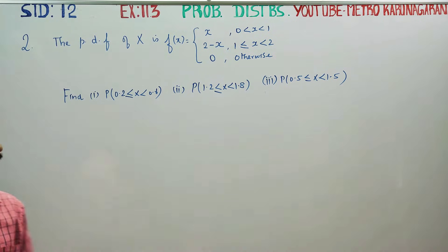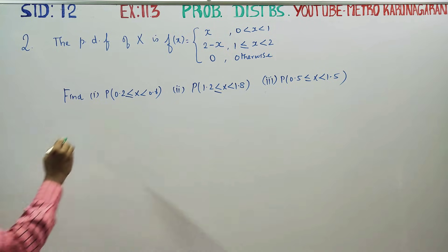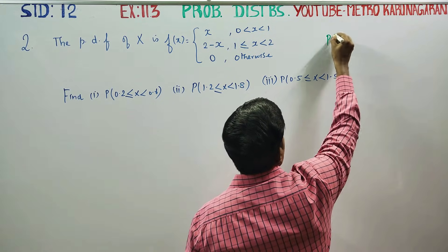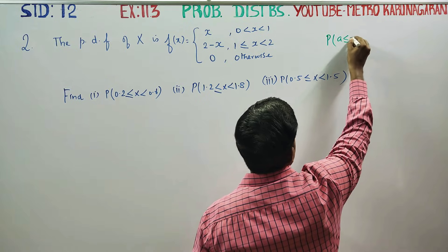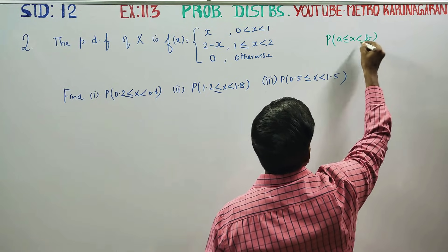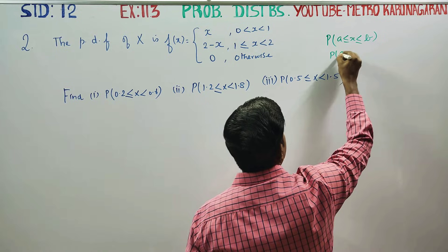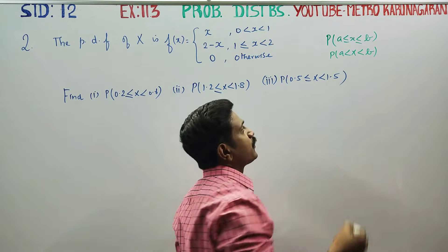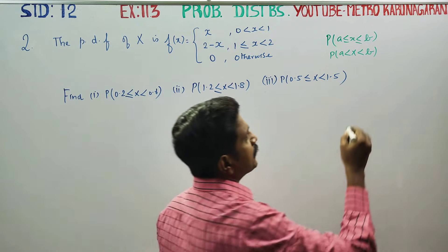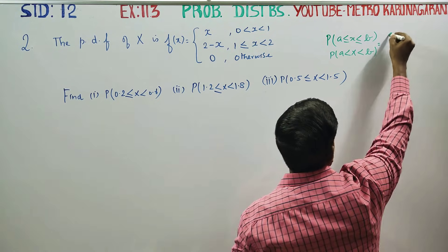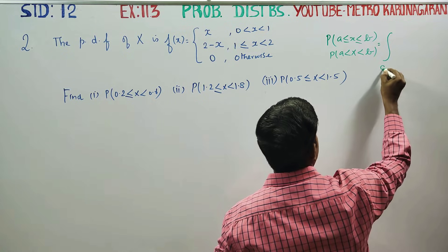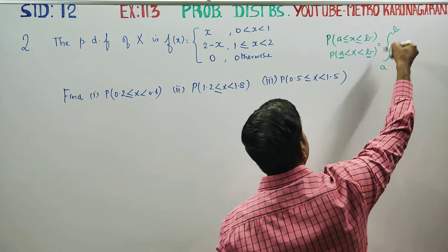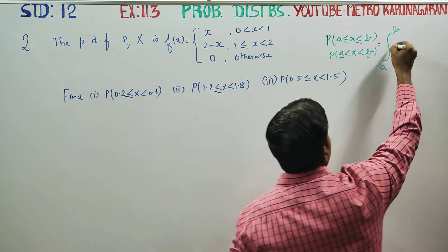They are asking us to find the probability. Before doing this sum, the probability of a less than or equal to x less than or equal to b goes like this: from lower interval to upper interval, the lower limit to upper limit of f(x) dx.